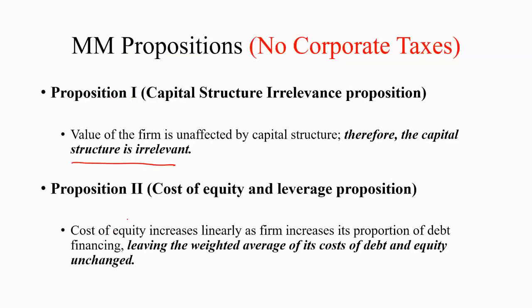Proposition 2 talks about cost of equity and leverage. It says that cost of equity increases linearly as the firm increases its proportion of debt financing, leaving the weighted average of its costs of debt and equity unchanged. In other words, the weighted average cost of capital remains unchanged irrespective of the percentages of debt and equity.